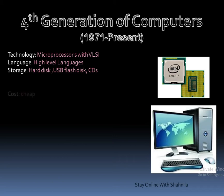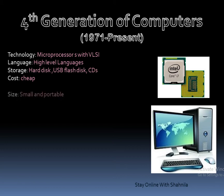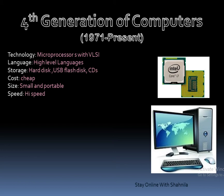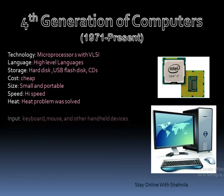In fourth generation computers, storage devices such as hard disks, USB flash drives, and CDs are used. They are cheaper, smaller in size, and portable — easily carried from one place to another. Their speed is very high and the problem of heat is also solved.